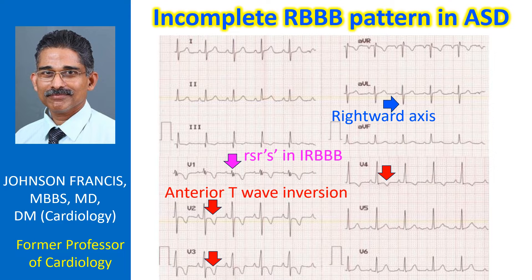The IRBBB pattern is seen in right ventricular volume overload. It could also be due to true delay in the right bundle branch. Even though IRBBB pattern is the characteristic ECG pattern of atrial septal defect, the typical pattern may not be seen in all cases.